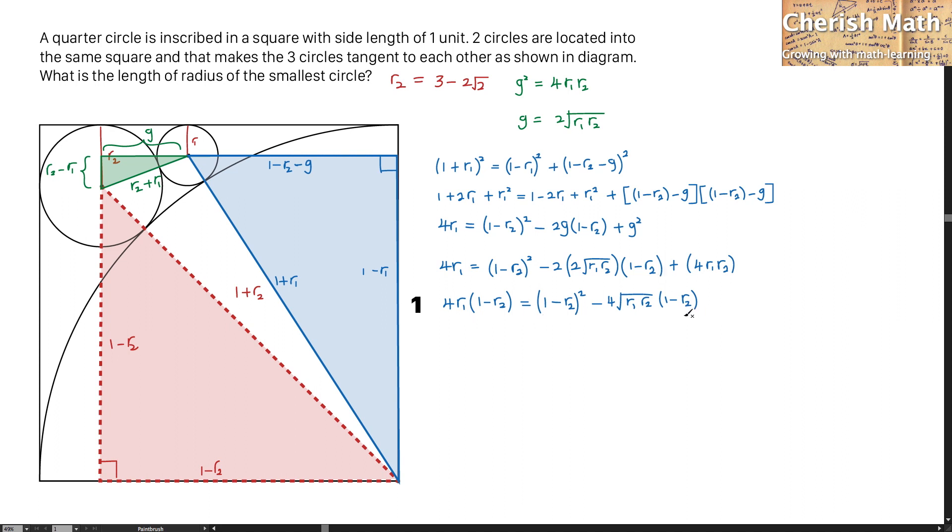Divide the entire equation here with 1 minus R2. And now, this is how it turns out. For the next, I'm going to rearrange in such a way by leaving 1 on the right hand side. And this part on the left hand side, I am going to factorize it.